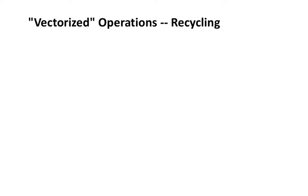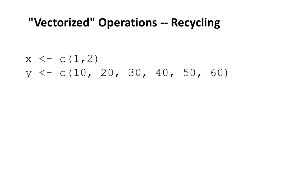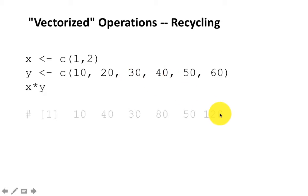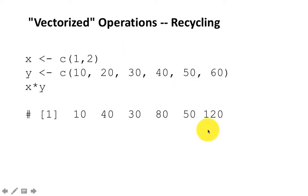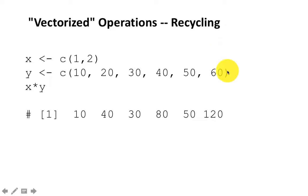We discussed the concept of recycling when it comes to vectorized operations. Here's one more example. This time, it's a proper multiple — this vector has two elements, this one has six. So R is going to do the job properly: it's going to cycle 1, 2, 1, 2, 1, 2, and then do the multiplication and you get the results. This phenomenon of R recycling the smaller vector to match the size of the larger vector is called recycling.